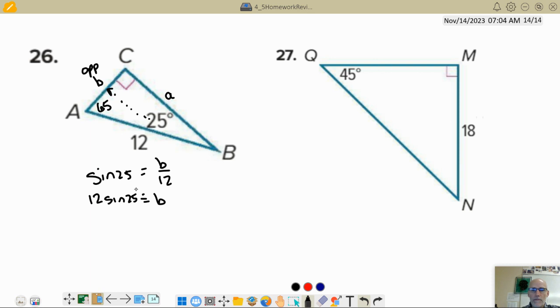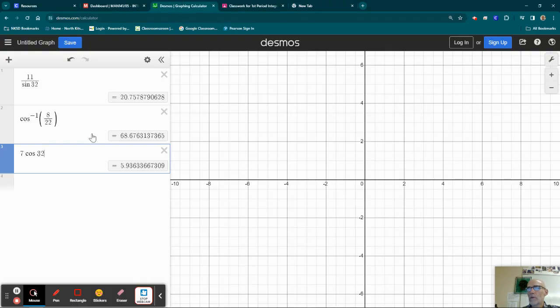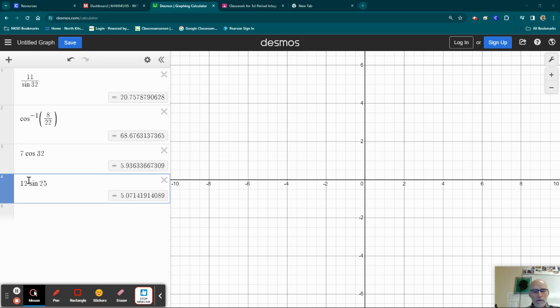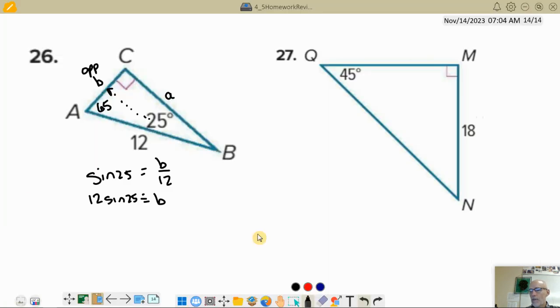So I head over to Desmos, 12 times sine 25, 12 sine 25, 5.1 it looks like. So 5.1 is my B value.